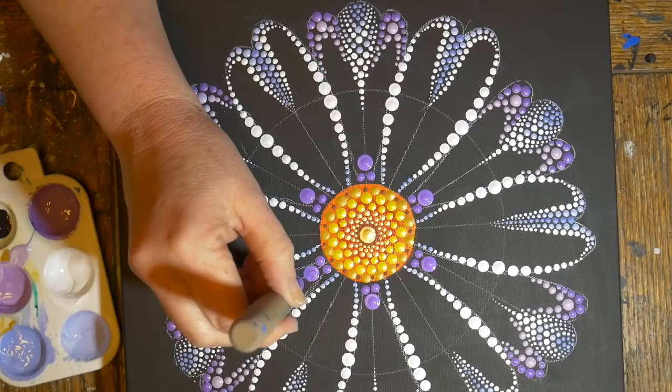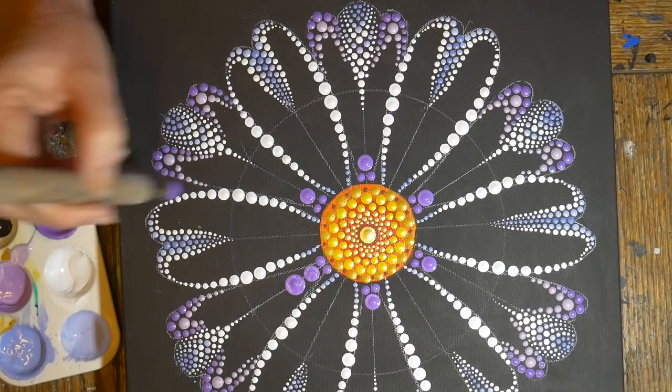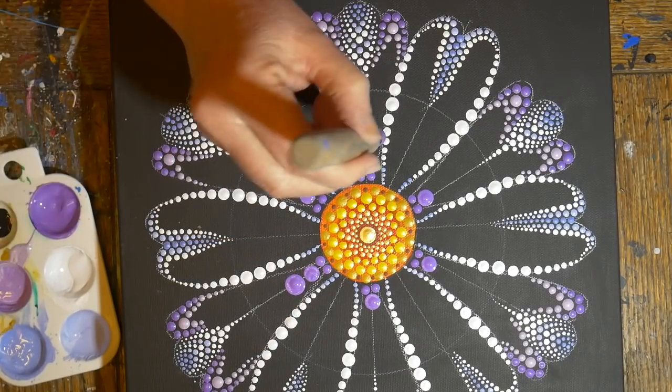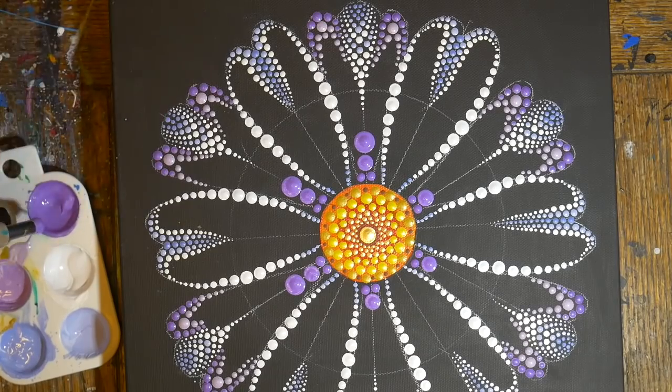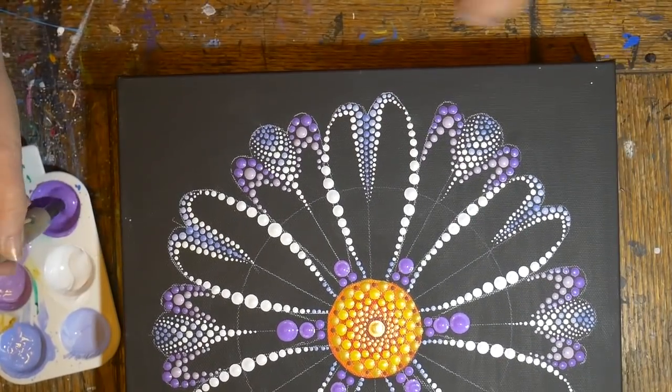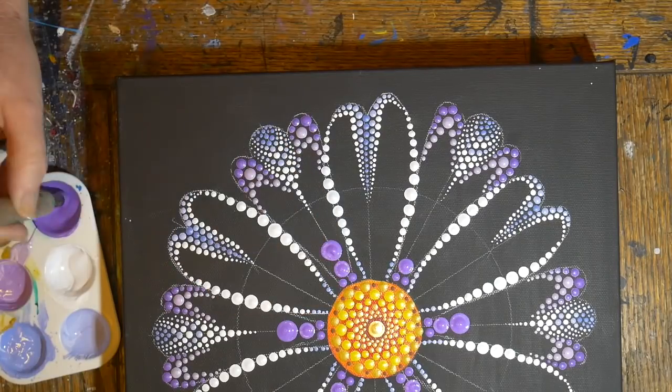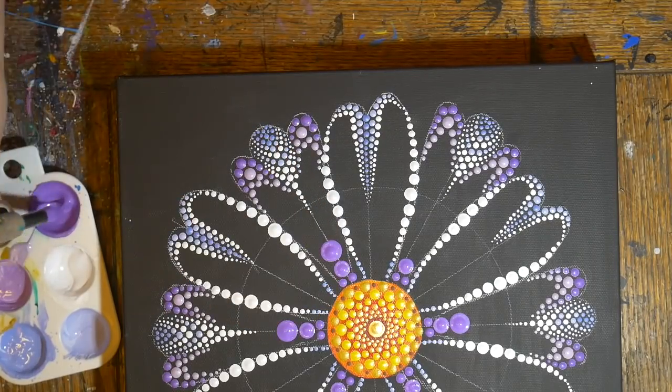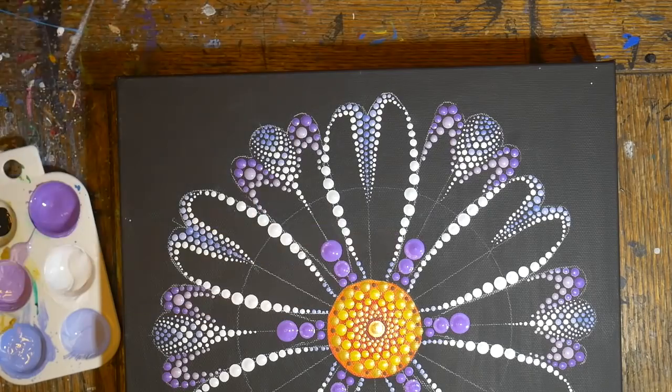So I did six rows predominantly purple and six rows predominantly blue, just kind of coming out here with the shapes. I wanted to leave some of the black but not too much.